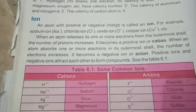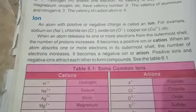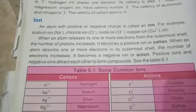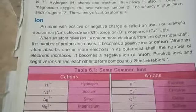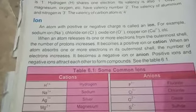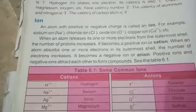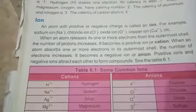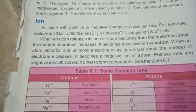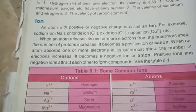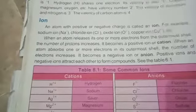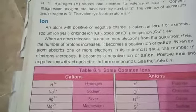An atom with a positive or negative charge is called an ion. When an atom loses or gains an electron, it does not remain an atom — it becomes an ion. For example, sodium loses one electron to become stable and forms a positive ion.